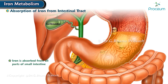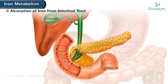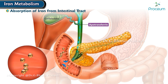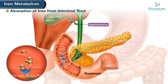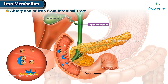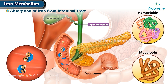Absorption of iron from the intestinal tract. Iron is absorbed from all parts of the small intestine, mostly by the following mechanism. The liver secretes moderate amounts of apotransferrin into the bile, which flows through the bile duct into the duodenum. The apotransferrin binds with free iron and also with certain iron compounds such as hemoglobin and myoglobin from meat — two of the most important sources of iron in the diet.